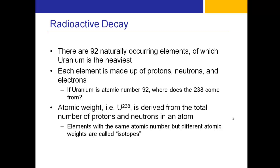For all intents and purposes, protons and neutrons have the same weight, so they use the same calculation — we sum them up, and that's the atomic weight. Elements with the same atomic number but different atomic weights are called isotopes.